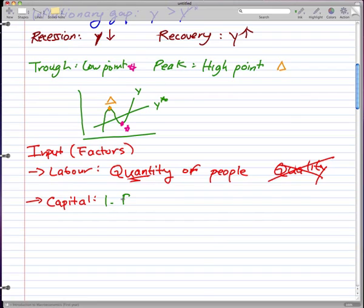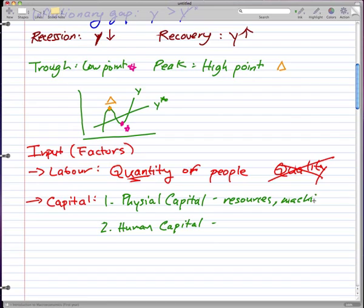The two types of capital I'm talking about are physical capital and human capital. These two factors are pretty self-explanatory. Physical capital are all the resources and machines that we use.